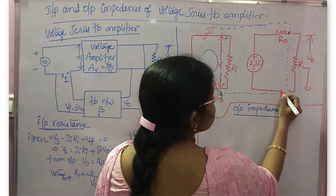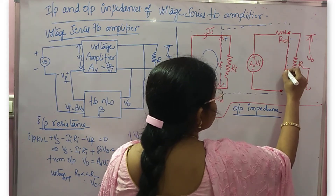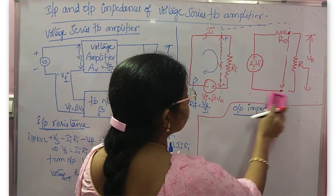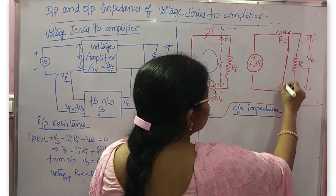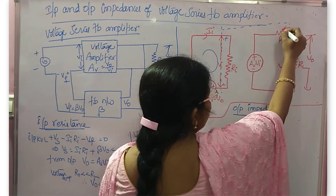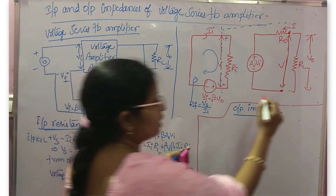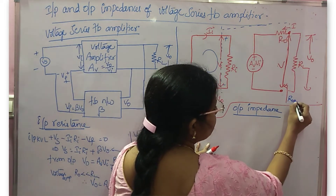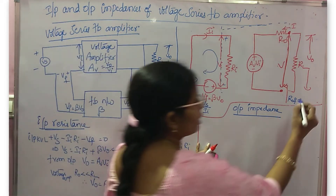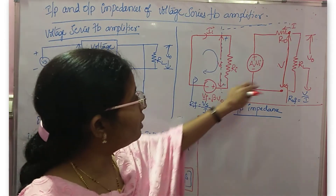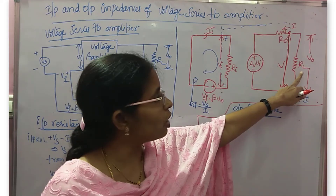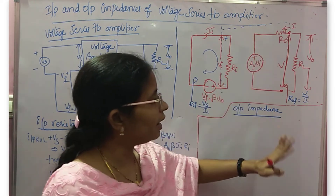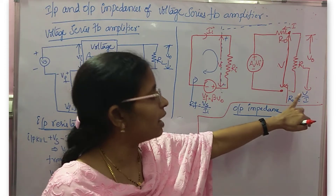Disconnect RL and take those terminals. Assume that the voltage here is V and the current flowing from this node is I. There exists an output resistance R0, but here you find R0F, where R0F is V divided by I. We generally take RL across as the output voltage, but as you are disconnecting RL, assume there is a voltage V and a current I. So the output impedance with feedback is V by I.